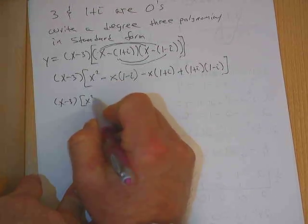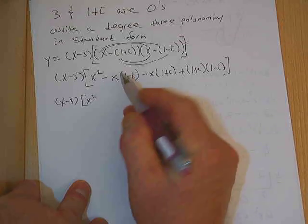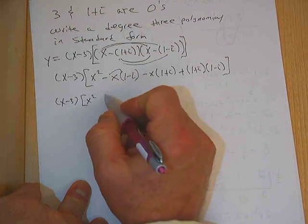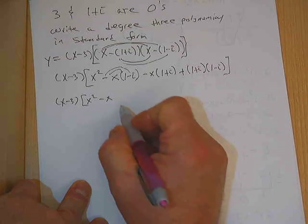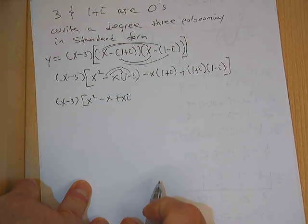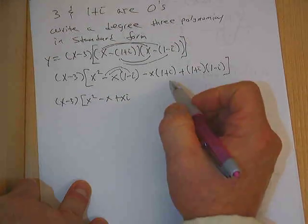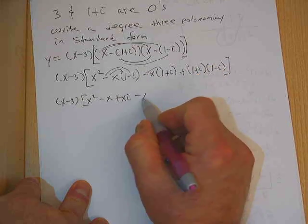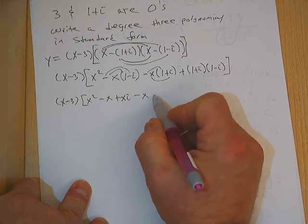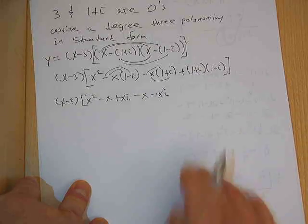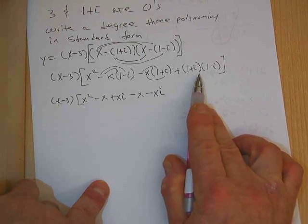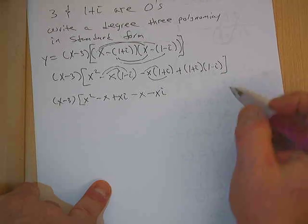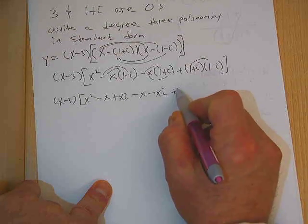Now watch what I have to do. The x minus 3 is still going to be there. This x squared is the way it is. Now I take negative x times 1, negative x. Negative x times negative i, plus xi. Negative x times 1, negative x. Negative x times i, negative xi. Now what do I have to do here? I've got to foil these.